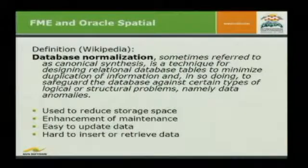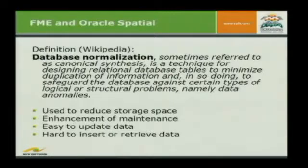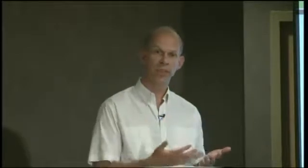The first topic is about normalization. Normalization is a database technique that's used to reduce storage and reduce redundancy in the database. Reducing redundancy is mostly an enhancement of maintenance. For example, let's say you're a database administrator in the city of New York, and you've got tables about addresses, parcels, streets — all of them have a city name. That city name, New York, is there about millions of times.